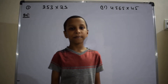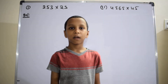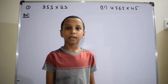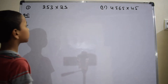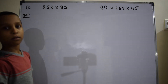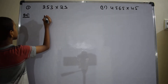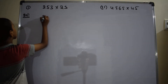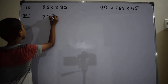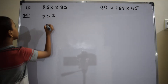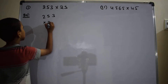Hi, I am Sayyaman Shashal. Now I am explaining the concept of multiplication. That is, multiplication of 253 into 23. Solution: 253 into 23.